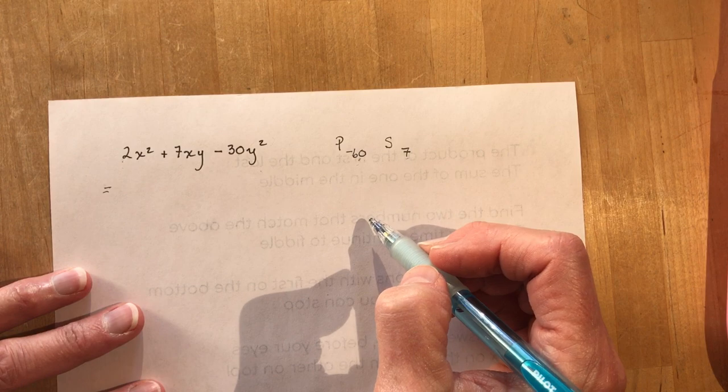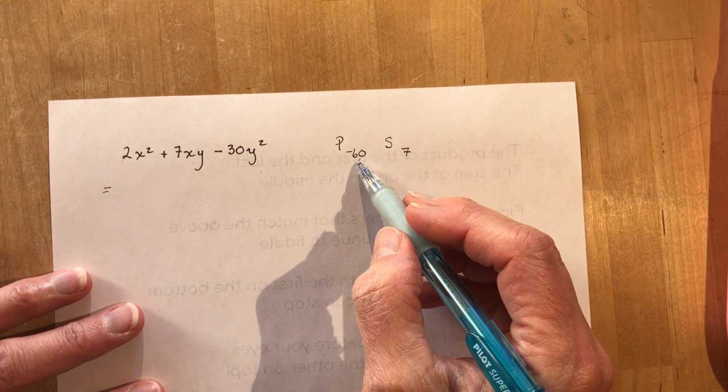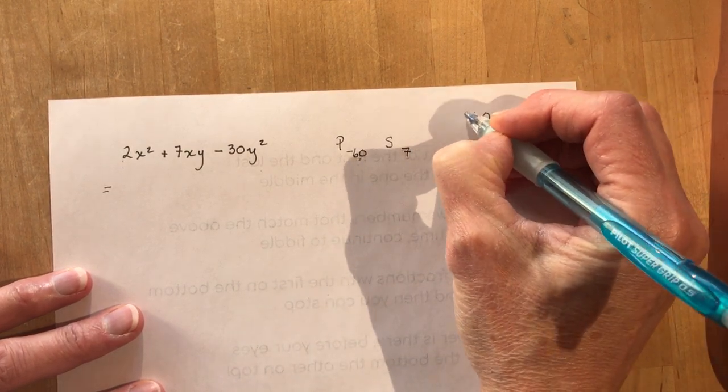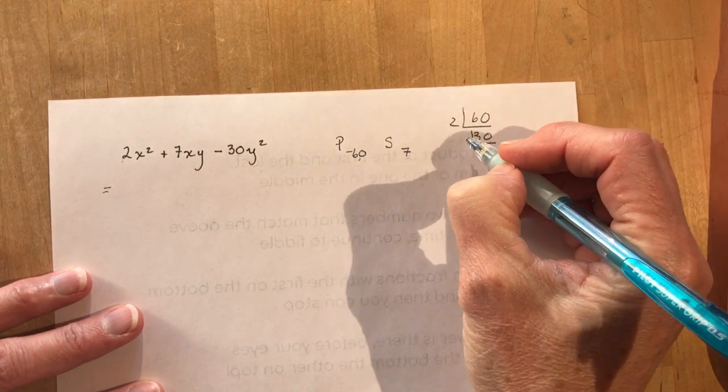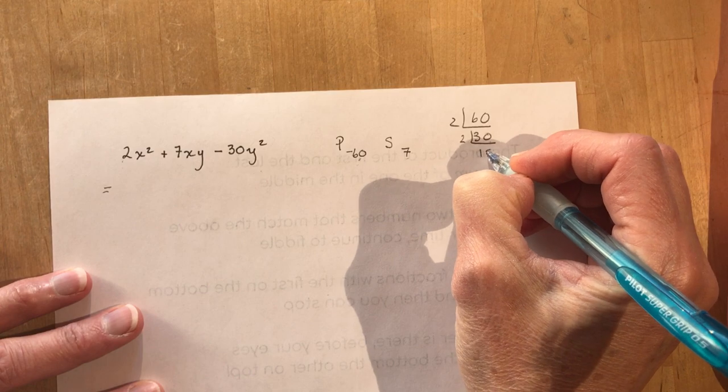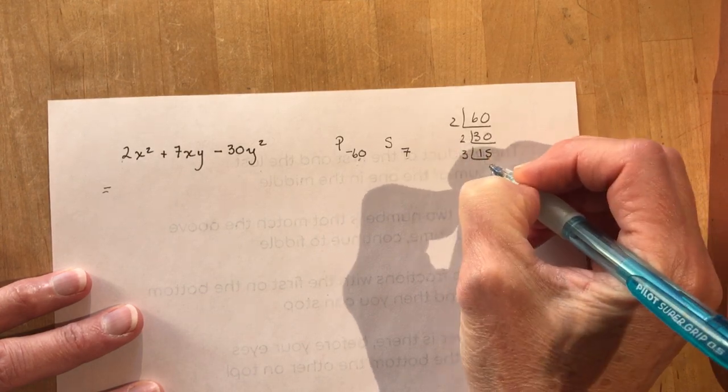Well you've got 6 times 10, well that's not going to make 7. What else multiplies to 60? Well divide it out. 60 divided by primes so 2 into 60 is 30. 2 into 30 is 15 and then I would have 3 and 5.